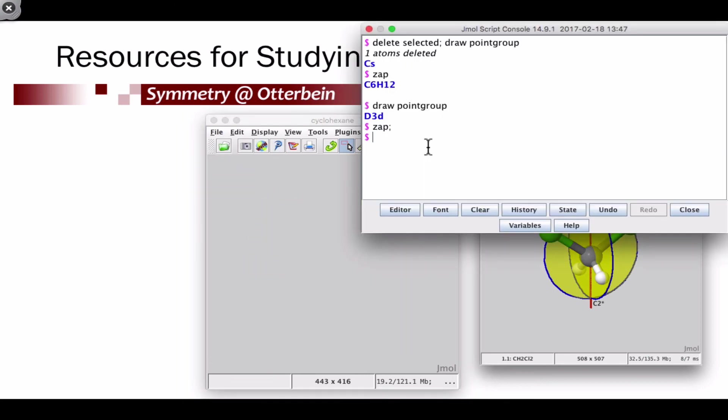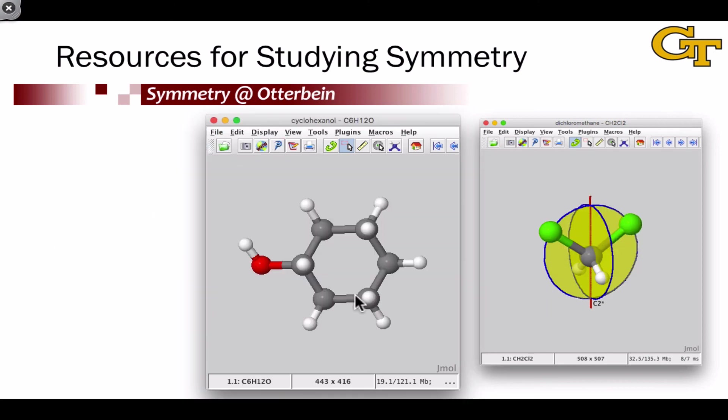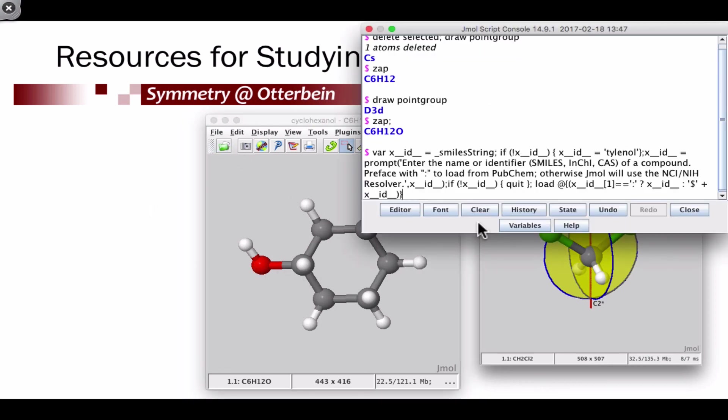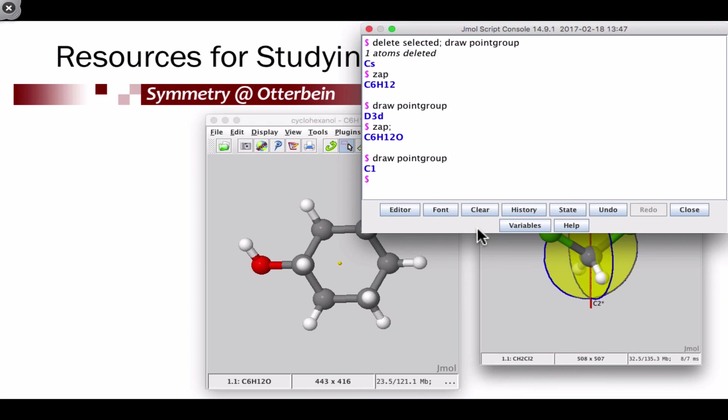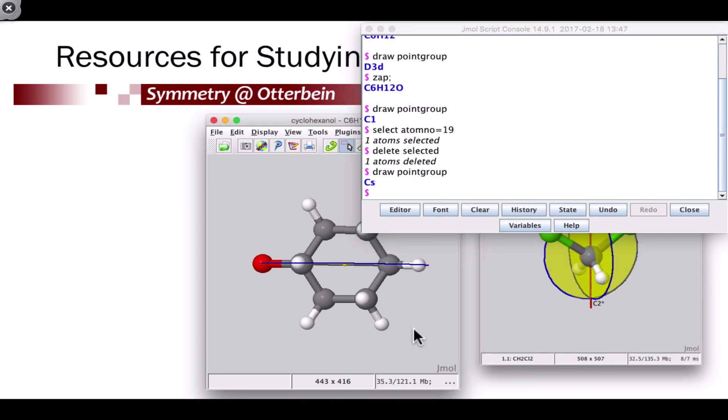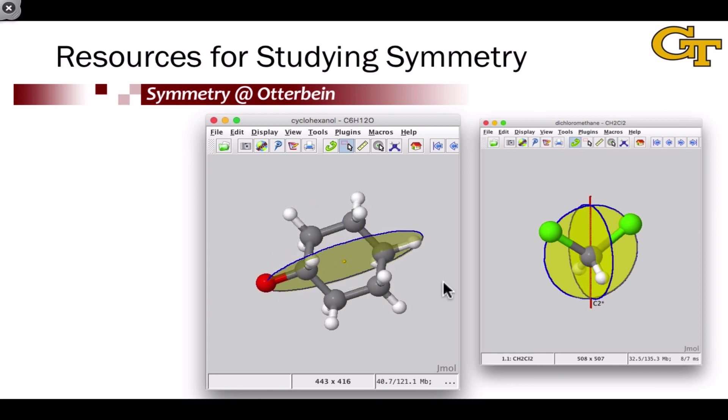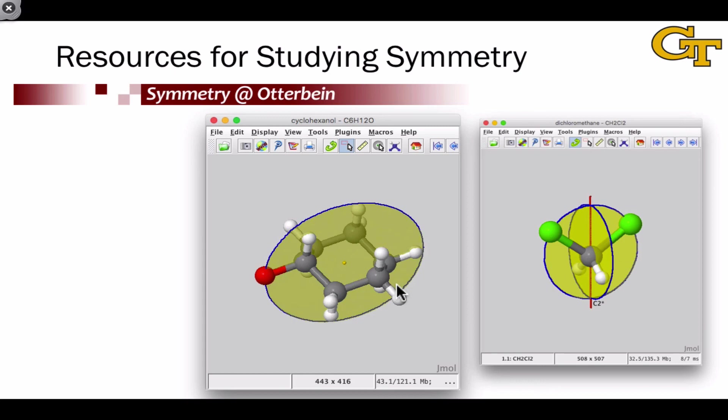One thing I would caution you on with respect to using Jmol to determine symmetry elements is that it's very strict about how it treats different conformations. And so where you might expect a plane of symmetry, for example running right through the middle of this molecule, cyclohexanol, Jmol may not identify that as a symmetry element if things aren't aligned perfectly. So here, the oxygen-hydrogen bond is aligned incorrectly to be within a plane of symmetry of this molecule. However, deleting that atom so that the molecule is now perfectly symmetric and rerunning draw point group gives us the expected plane of symmetry in cyclohexanol. So you may need to play around a little bit with conformation or delete atoms in order to make expected symmetry elements appear.